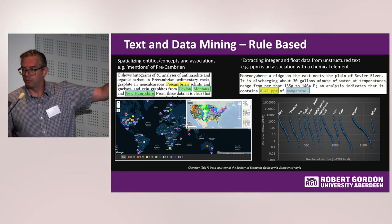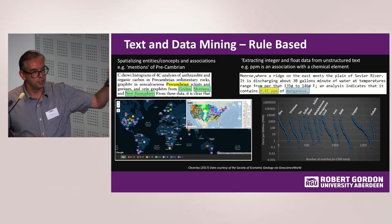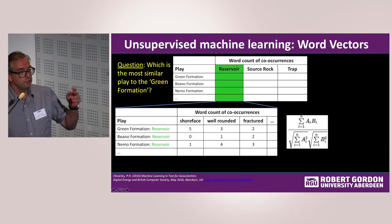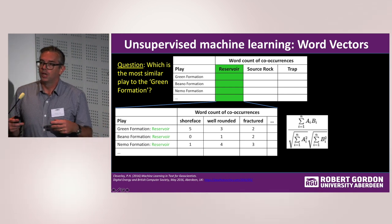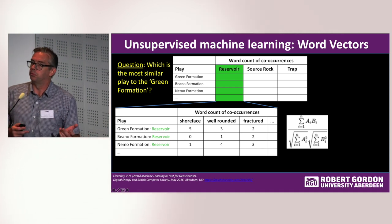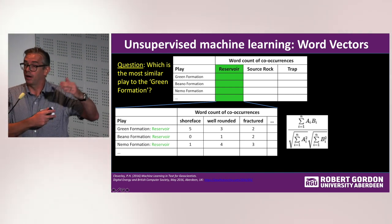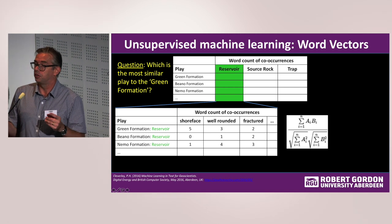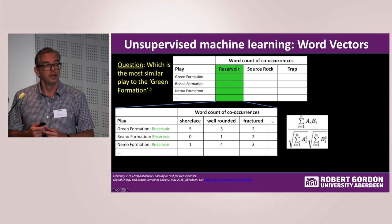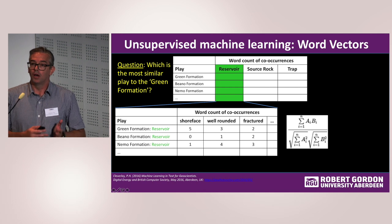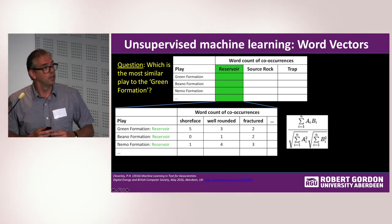Almost every operator or service company is doing these sorts of extractions, including on images. But what else can we do? For unsupervised learning: imagine you have a corpus of text and you've extracted lithostratigraphic formations using a rule such as extracting nouns that occur before the word 'formation' with a capital F, or before 'member' with a capital M. Perhaps you don't have a lookup list. What we can do is look at the words around those entities as they appear in text, count them, and create a mathematical vector for that text.